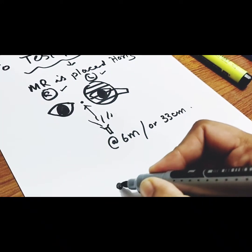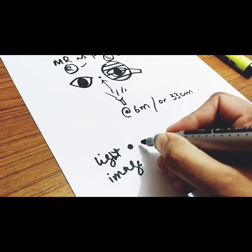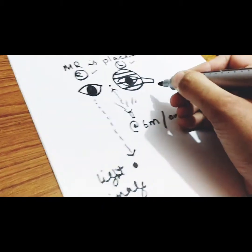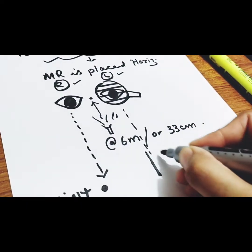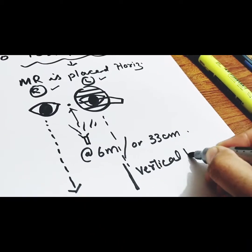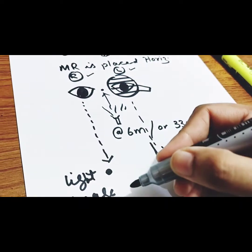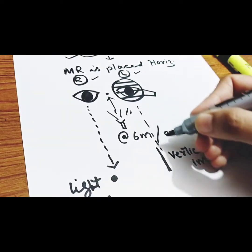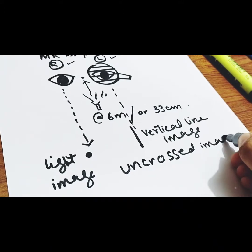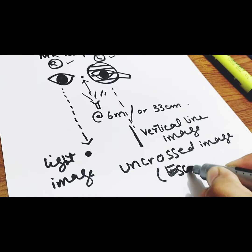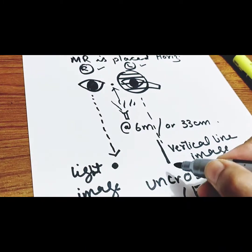From the right eye, the patient sees a light reflex or light image. From the left eye, the patient sees a line image — the Maddox rod converts the point source of light into a vertical line image. The right eye sees the light reflex, the left eye sees the vertical line image. This is an uncrossed image, as the light image is in the same direction as the right eye and the line image is in the same direction as the left eye. Uncrossed image means esophoria.